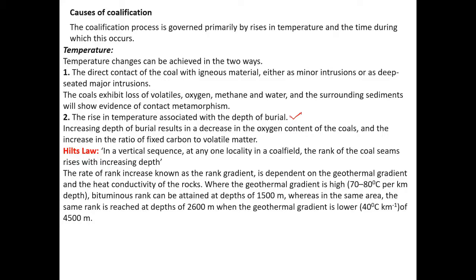Where the geothermal gradient is high — around 70 to 80 degrees Celsius per kilometer — bituminous rank can be attained at depths of 1,500 meters. Whereas the same rank is reached at depths of 2,600 meters when the geothermal gradient is lower, that is around 40 degrees Celsius per kilometer. So depending on the geothermal gradient as well as how the rocks conduct heat, the rank gradient of the coal shall be decided.